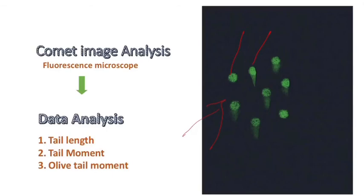The first one is the tail length, which is the distance between the head and the last DNA fragment. The second one is the tail moment, which is the amount of DNA migrated multiplied by the tail length.